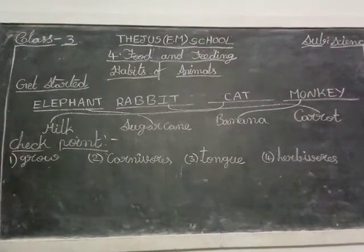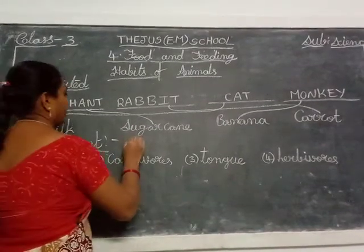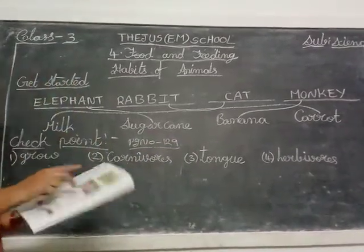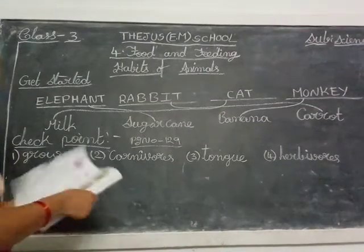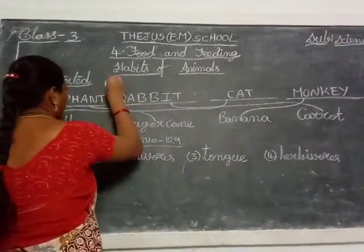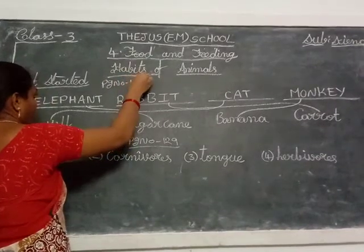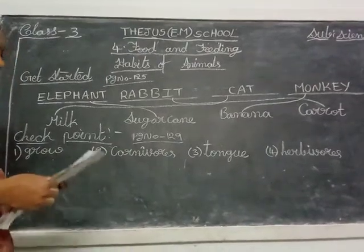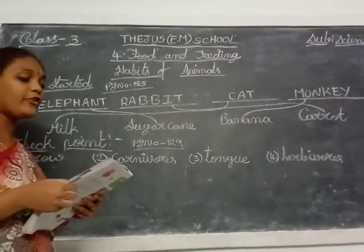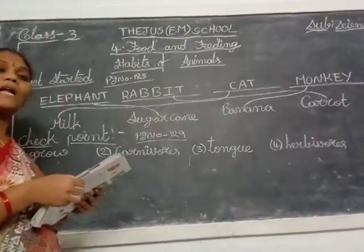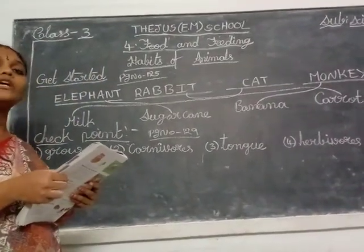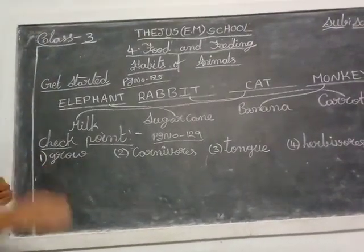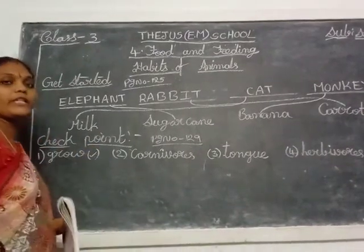Turn to page number 129. Checkpoint is there on page number 129. Animals need food to sleep, grow, bark — which one is it, children? Animals need food to grow. G-R-O-W. Grow is the correct one. You tick that answer.